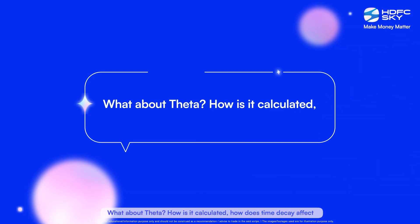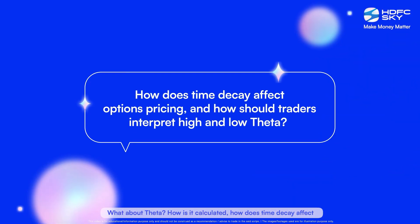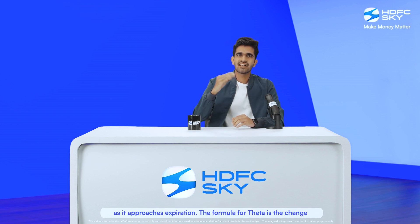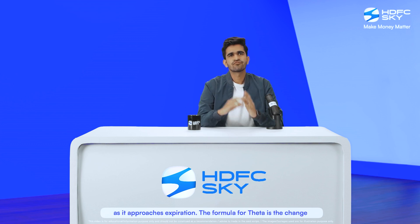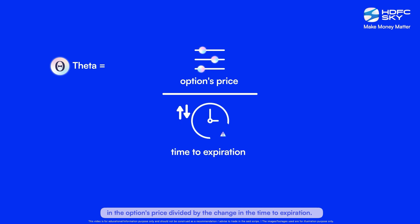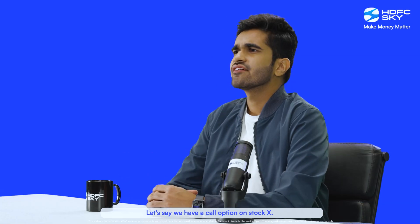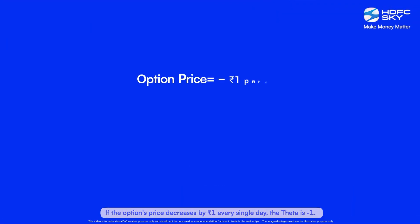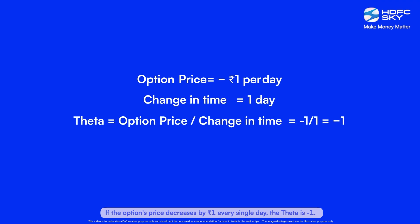And what about Theta? How is it calculated, how does time decay affect options pricing, and how should traders interpret high and low Theta? Theta measures the rate at which an options price declines as it approaches expiration. The formula for Theta is the change in the options price divided by the change in the time to expiration. Let's say we have a call option on stock X with 30 days to expiration. If the options price decreases by ₹1 every single day, the Theta is minus 1.